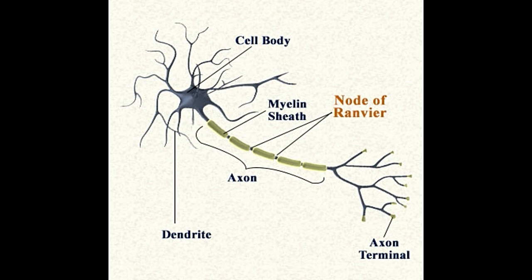In case the whole axon membrane is exposed to the positively charged ions — absence of myelin — depolarization would take place at every spot on the axon, therefore slowing conduction. Nodes of Ranvier, in simple terms, are like gates. They allow exchange of ions for speedy electrical transmission.